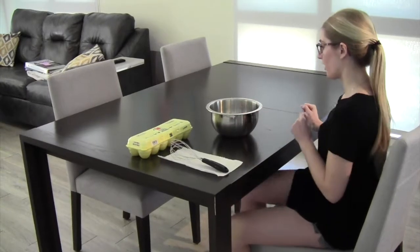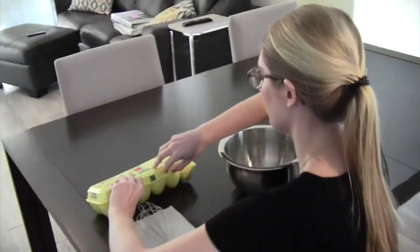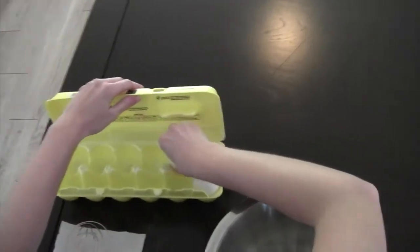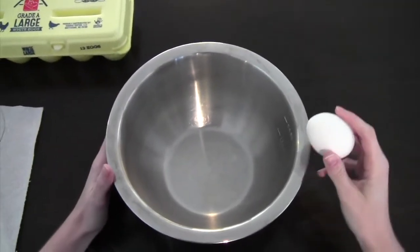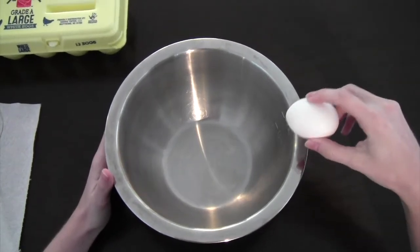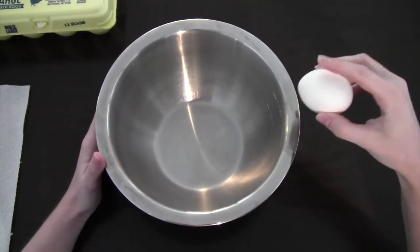So first we're going to crack our egg. I'm going to get it out of the container. To crack your egg, you're going to just gently tap on the side of the bowl until it's cracked.